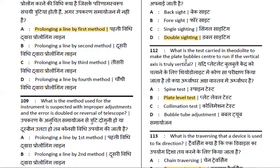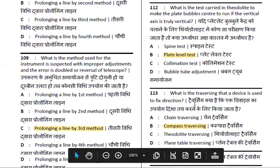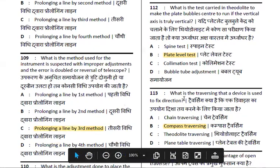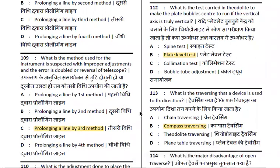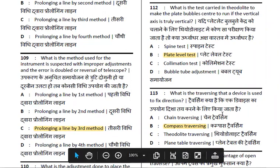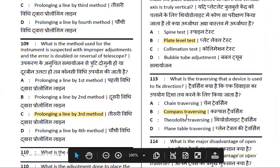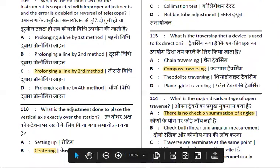The plate level test is part of the permanent adjustments of the theodolite. We will discuss further details — the link is in the description. Next: what is traversing? It is a device used to fix the direction. That is converse traversing.